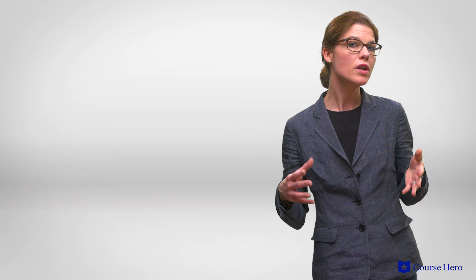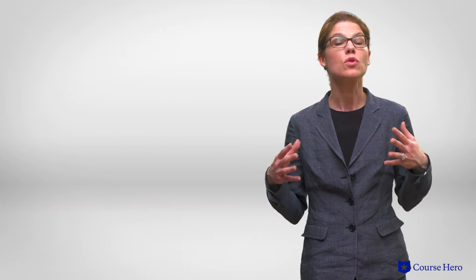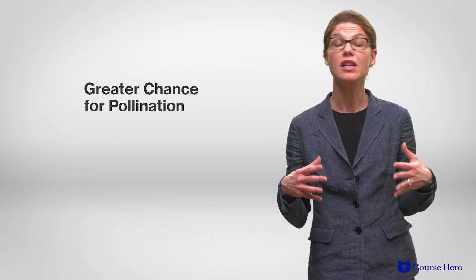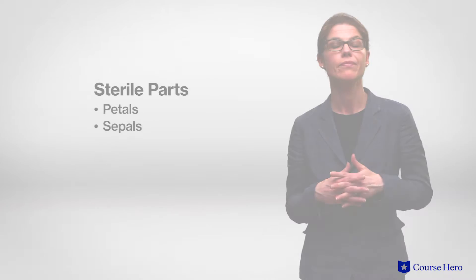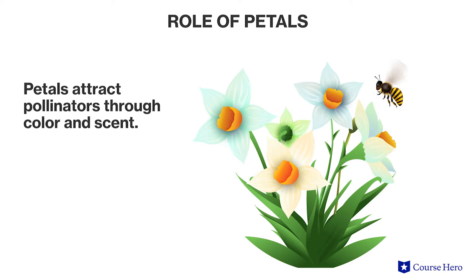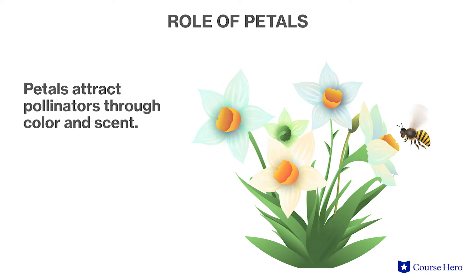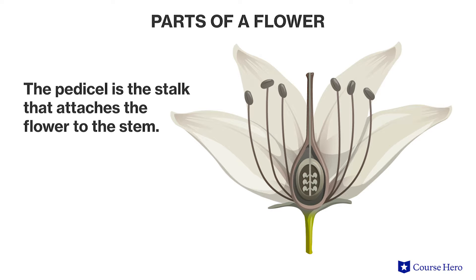Although a flower will only have one pistil, it will have multiple stamens. This gives flowers a greater opportunity for pollinators to carry pollen to other flowers for cross-pollination. The sterile parts of the flower include the petals and sepals. Although the petals play no role in producing seeds, they do attract pollinators with their color and scent. The calyx is composed of sepals, and it protects the flower bud before blooming. The pedicle is the stalk that attaches a flower to the stem, much like the petiole that attaches a leaf to a branch.